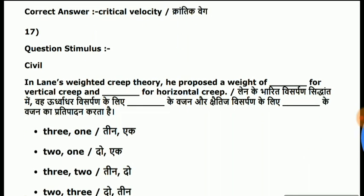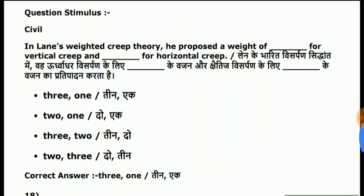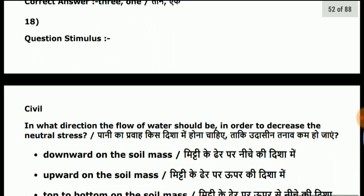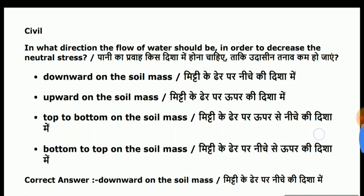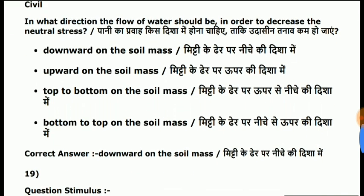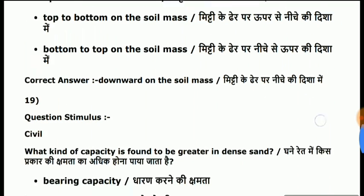Question 17: In Lane's weighted creep theory, he proposed a weight of 3 and 1. Question 18: in what direction should the flow of water be in order to decrease the neutral stress? Answer is downward on the soil mass.